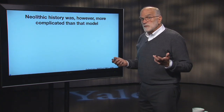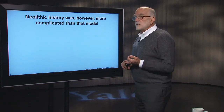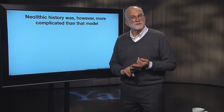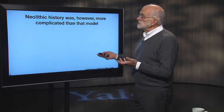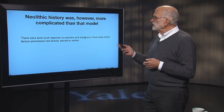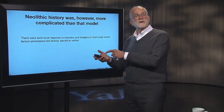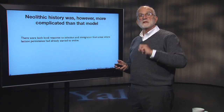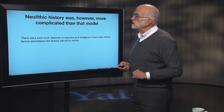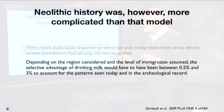We can now reconstruct this process to a certain degree. We can actually recover Neolithic pottery that has traces of milk in it, recover the bones of domesticated cattle, sheep, and goats, and date them with carbon-14. That's shown us that our Neolithic history was more complicated. There were local responses to selection, and immigration from areas where lactase persistence had already started to evolve. Depending on the region and the level of immigration assumed, the selective advantage of drinking milk would only have had to be between about 0.5 and 3 percent to account for the patterns we see today.